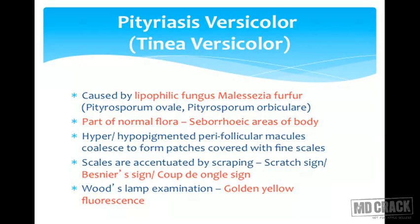The scales are sometimes not prominent, so we can accentuate them by scraping — this is called the scratch test, the Besnier sign, or the Coup d'Ongle sign. On Wood's lamp examination, the scales show a golden yellow fluorescence, which is very classical for Tinea versicolor.